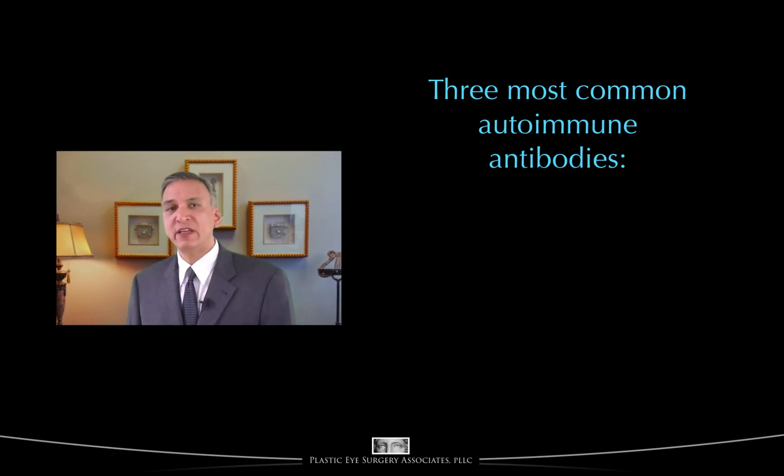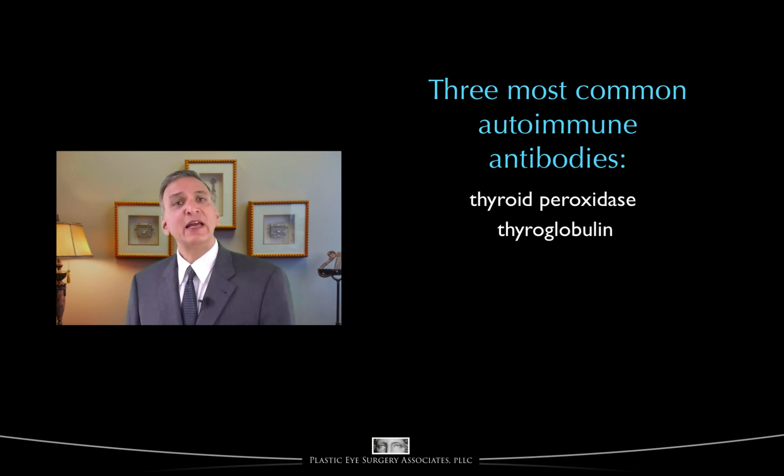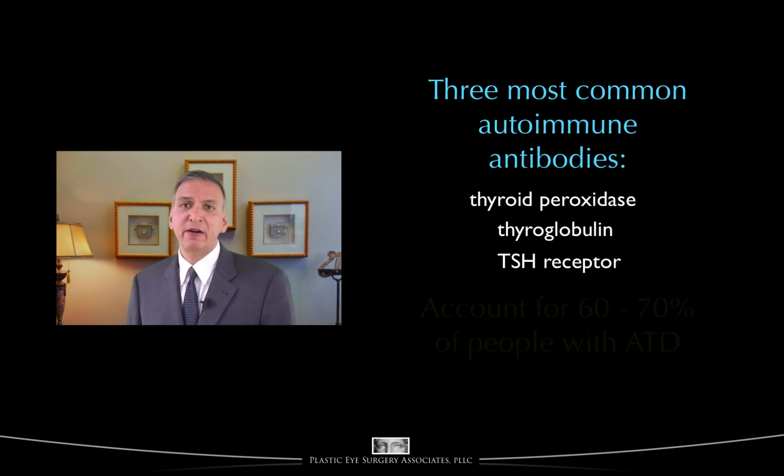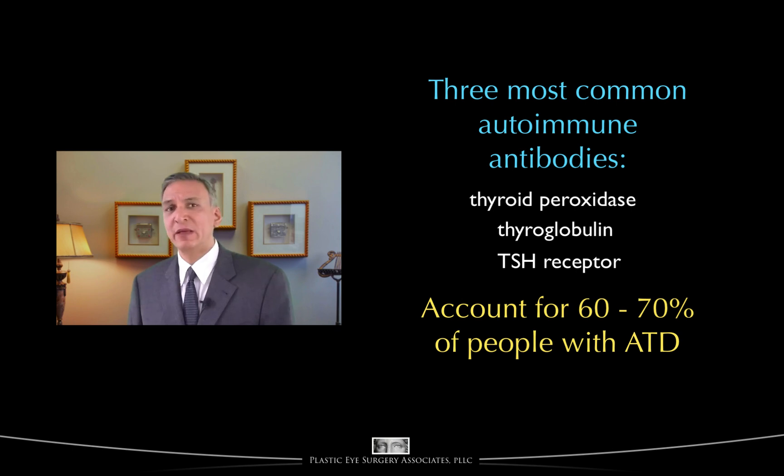A growing number of autoimmune antibodies are suspected of being involved in ATD. There are recognized autoimmune antibodies against thyroglobulin (that's T4), thyroid peroxidase — the enzyme that assists in the production and metabolism of all the thyroid hormones — against T4, T3, TSH, and the TSH receptor, among many others. The three most common of these — thyroid peroxidase antibody, thyroglobulin antibody, and TSH receptor antibody — probably account for about 60–70% of people with ATD.